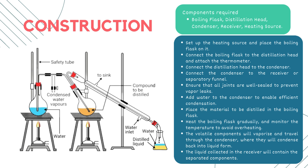The next component, which is the heart of the distillation, is the condenser. The condenser cools the vapors, causing them to condense back into liquid form. It is typically a type of heat exchanger where cold water or coolant circulates around it to facilitate condensation. The next component is the receiver or separatory funnel, which collects the distillate — the liquid collected after condensation — and allows for separation of immiscible liquids, such as essential oil and water.